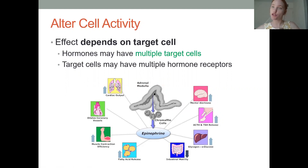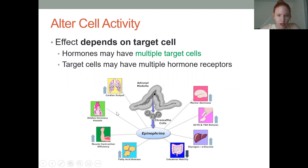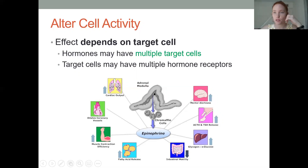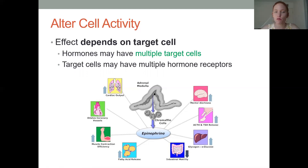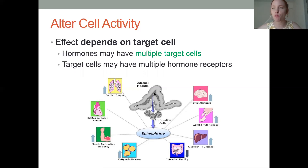Epinephrine, another name for which is adrenaline, triggers many physical responses. At the heart, it increases heart rate and dilates coronary vessels. It also increases mental alertness and decreases motility in the digestive tract. So different cells produce different responses, all responding to one single hormone — epinephrine.